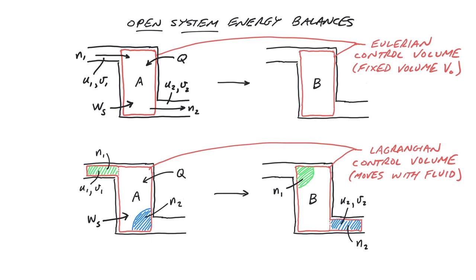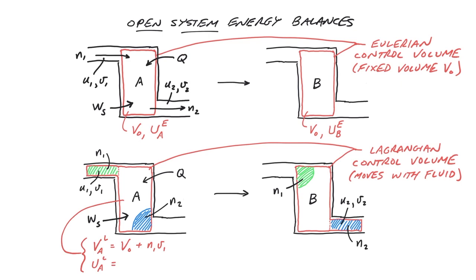The disadvantage is that it's more complicated to formulate balances this way as a general matter of practice. So for convenience, we actually want to get away from it as quickly as possible, recasting our balance equation in terms of the original fixed but open Eulerian control volume. To do this, we can invoke the principle that volume and internal energy are extensive. This allows us to relate the volume and internal energy of the Eulerian system to the Lagrangian system simply by adding the extensive volume and internal energy in the two conduits.